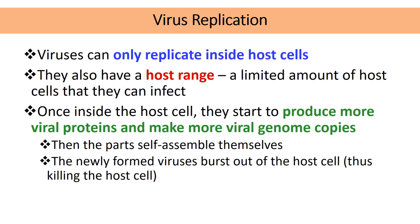As mentioned, viruses are unable to replicate on their own, which is why they must infect a host cell to use its ribosomes to produce more viral particles. Some viruses are very specific and will only infect a specific type of cell. Once inside the host cell, the virus begins to produce more viral particles and more genetic material. These particles then assemble to produce new viruses, which burst out of the cell, essentially killing the host cell.